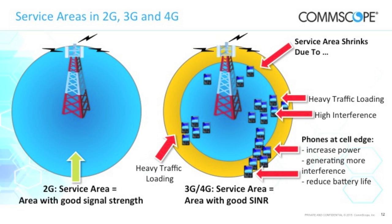Now I want to talk about service areas in 2G, 3G, and 4G. When I was planning GSM networks in Germany in the 90s, our intention was to cover as much area as possible as fast as possible. In 2G, the service area is essentially the area where you have good signal strength. Then we started rolling out UMTS and it got more complicated — the simple equation that service area equals area with good signal strength doesn't apply anymore.